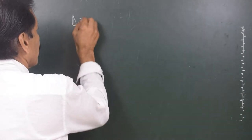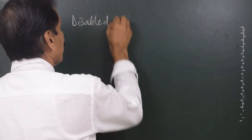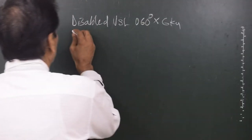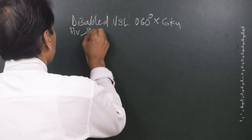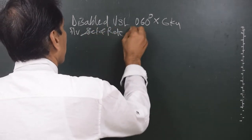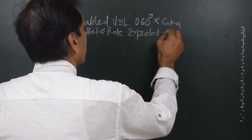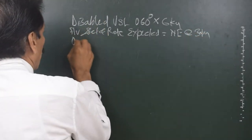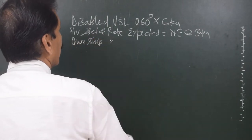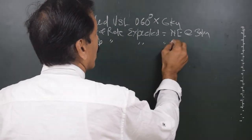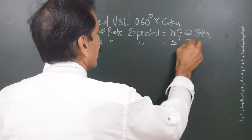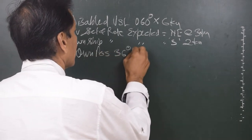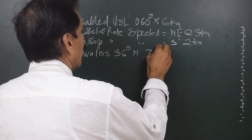Let us say there is a disabled vessel going 060° at six knots. The average set and rate expected for the target is northeasterly at three knots, and own ship's current and rate expected is northerly two knots. Own ship position is 36° North, 70° East.